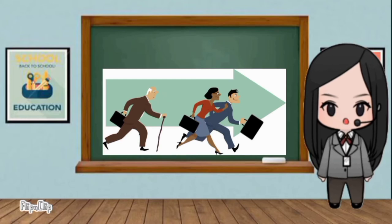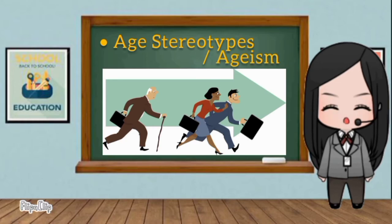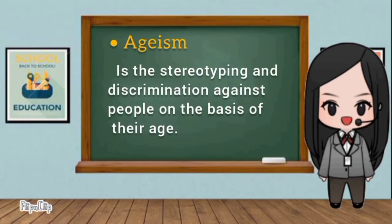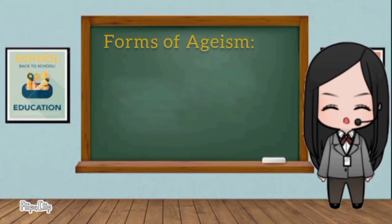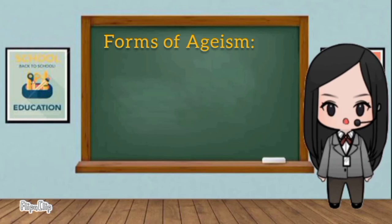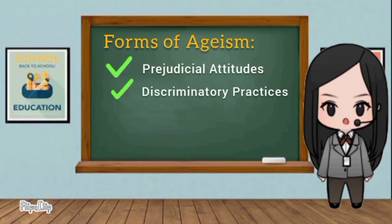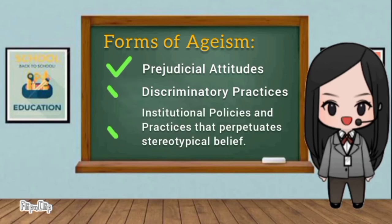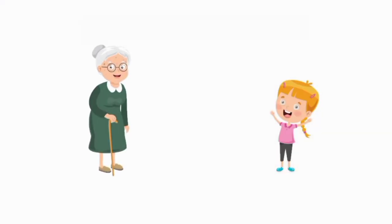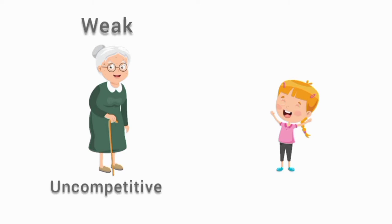Another kind of stereotyping is what we call the age stereotype, or commonly known as ageism. According to the World Health Organization, ageism is the stereotyping and discrimination against individuals or groups on the basis of their age. Ageism can take many forms, including prejudicial attitudes, discriminatory practices, or institutional policies and practices that perpetuate stereotypical beliefs. For example, older people are called weak and incompetent, while the young ones are strong and energetic.